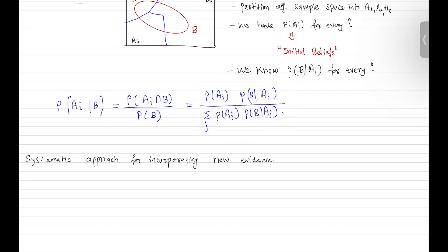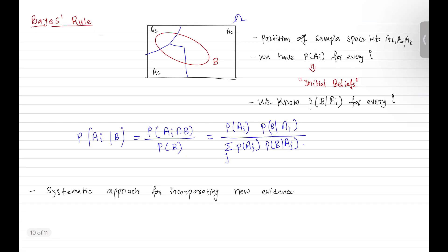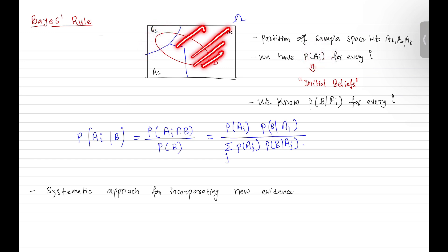So this is what Bayes' rule is. Bayes' rule gives us a tool to calculate or to have a systematic approach for incorporating new evidence. Once we have this new evidence, based on this new information, our initial belief is revised. The general idea is that we start with a probabilistic model where we have n possible scenarios — for this example, three scenarios A1, A2, and A3 — and we have some initial belief about each scenario.